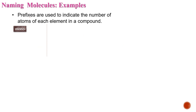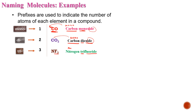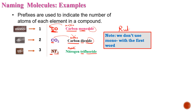Very important: mono means one. For example CO — if I want to name CO, it will be 'carbon monoxide.' Mono tells us there is one oxygen. Di means two — CO2 is 'carbon dioxide' because there are two oxygens, and the second name always ends in -IDE. NF3 is 'nitrogen trifluoride' because I have three fluorine atoms. Tri means three.